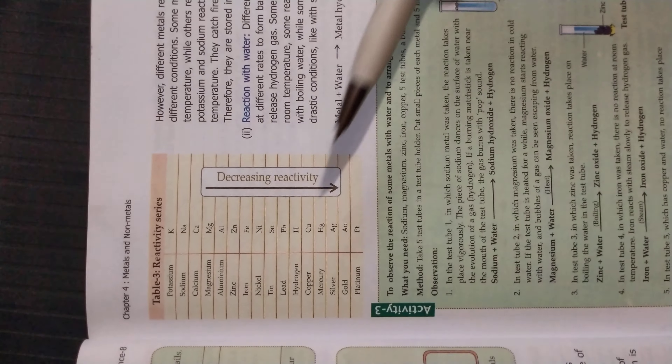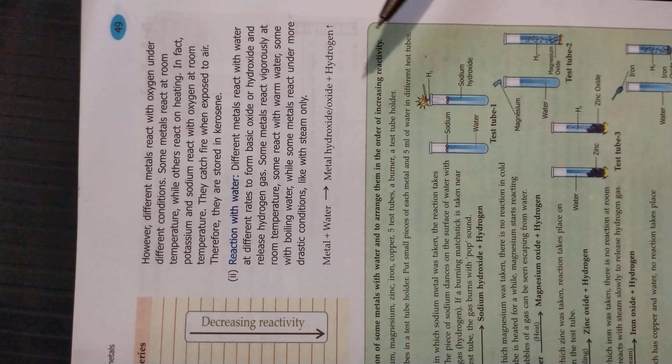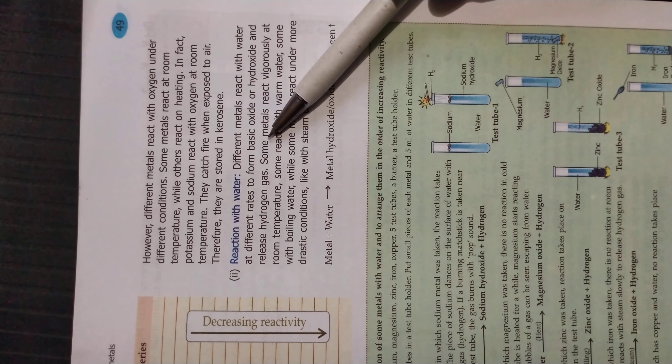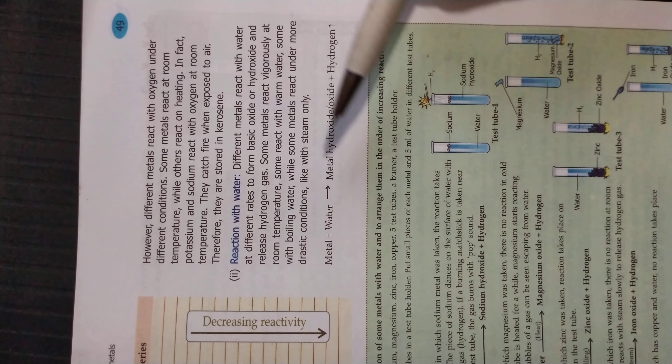In the reactivity series, potassium and sodium are at the top, meaning they are very reactive. Some metals react with other elements even on heating, while some react just by themselves in the presence of oxygen. Potassium and sodium, when exposed to air, react with oxygen and catch fire — therefore they are stored in kerosene oil.